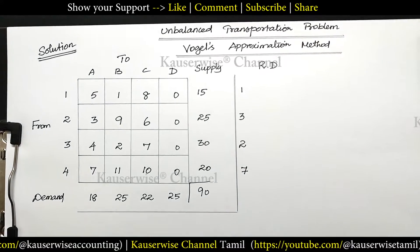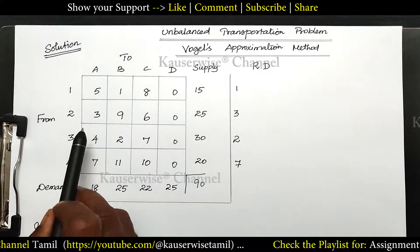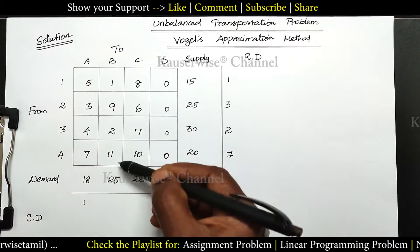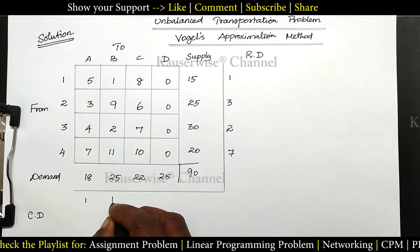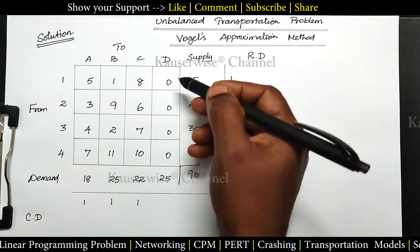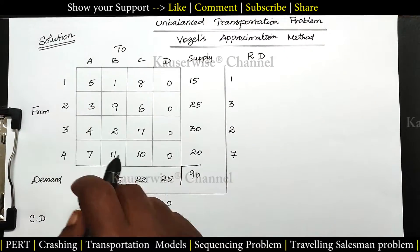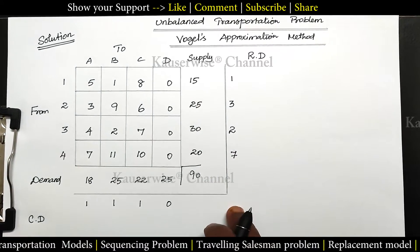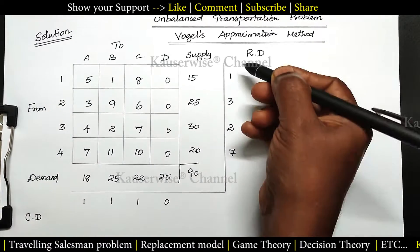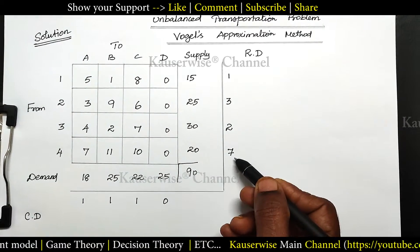In the same way we need to find column difference for each and every column. First column: least value 3, next least value 4, difference 1. Second column: 1 and 2, difference 1. Next column: 6 and 7, difference 1. Last column: 0. Now after finding row difference and column difference, we need to select the highest penalty. Among these penalties, which is the highest value? 7 is the highest value.